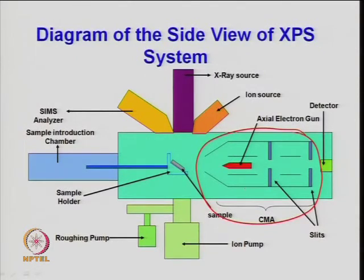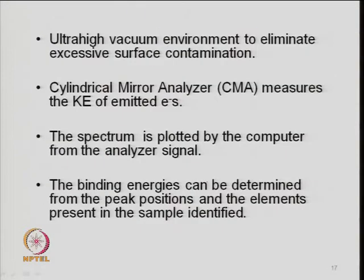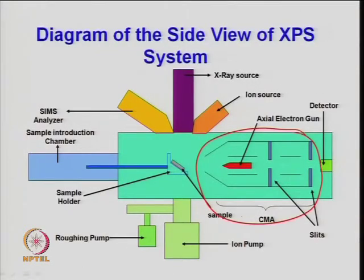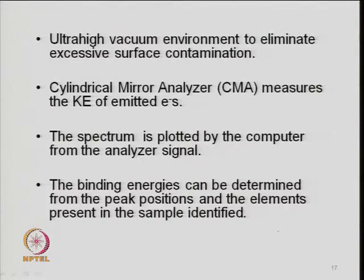After the first chamber at low vacuum, the sample is introduced into the second chamber where ultra-high vacuum exists. An ion pump and roughing pump create the vacuum in the system. Then the electrons are measured for kinetic energy after the beam hits. Ultra-high vacuum environment is needed to eliminate excessive surface contamination, since it is a very surface-sensitive technique. A cylindrical mirror analyzer (CMA) measures the kinetic energy of the emitted electrons.